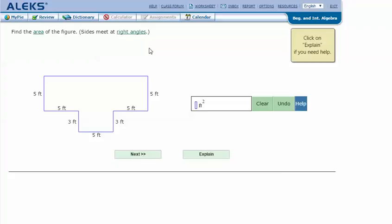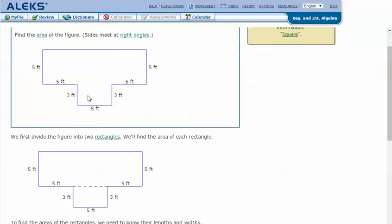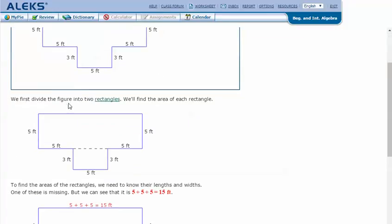Let's click explain. We first divide the figure into two rectangles. We'll find the area of each rectangle. To find the areas of the rectangles, we need to know their lengths and widths. One of these is missing.